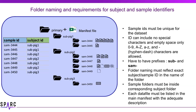Folder naming must actually reflect the exact subject and sample ID. That way we can confirm that sample 345 in the folder is actually sample 345 in the spreadsheet. Sample folders must be inside of the subject folders. Each data file must be listed in the main manifest with adequate description. The manifest file will be generated and updated by SODA, so we strongly encourage you to use SODA because it allows automated creation of that manifest file.